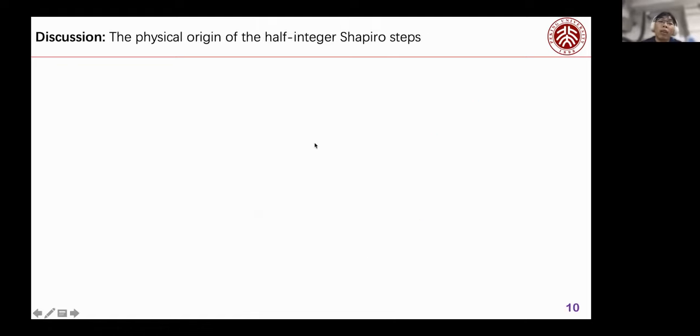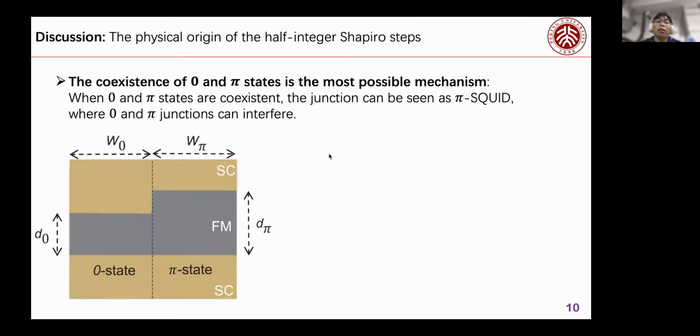Next, I want to discuss the physical origin of the half integer Shapiro steps in strong ferromagnetic Josephson junction. From our best understanding, the coexistence of zero and π states is the most possible mechanism. You can see from this figure, when the thickness is varying in the whole sample, there could be zero states and π states. When zero and π states coexist, the junction can be seen as where zero and π junctions can interfere.